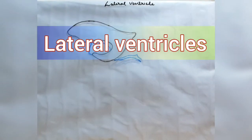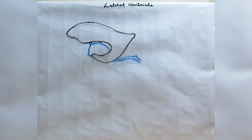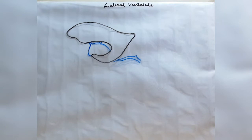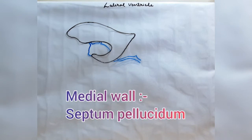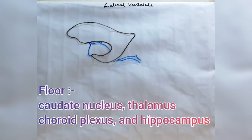First, let us talk about lateral ventricles. Lateral ventricles are two irregular elongated cavities situated within each cerebral hemisphere and remain separated from each other by a thin vertical partition called septum pellucidum. The roof of the lateral ventricle is formed by the genu, truncus, and splenium of the corpus callosum. The medial wall is formed by septum pellucidum, and the floor is formed by the caudate nucleus, thalamus, choroid plexus, and hippocampus.